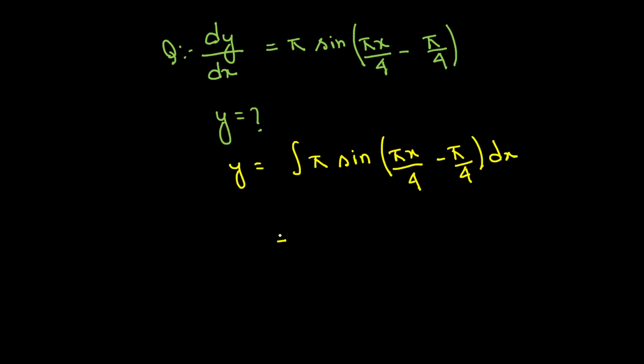dy by dx is equal to pi sin pi x by 4 minus pi by 4. This is divided by pi x minus 4 minus pi by 4. If we differentiate, it becomes just pi by 4 remaining. Pi by 4 plus c.